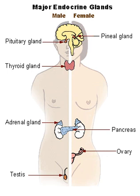The endocrine system is in contrast to the exocrine system, which secretes its hormones to the outside of the body using ducts. As opposed to endocrine factors that travel considerably longer distances via the circulatory system, other signaling molecules, such as paracrine factors involved in paracrine signaling, diffuse over a relatively short distance.